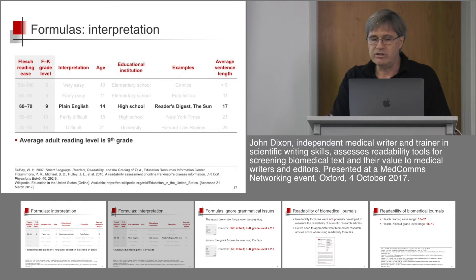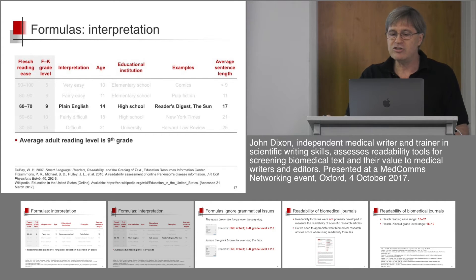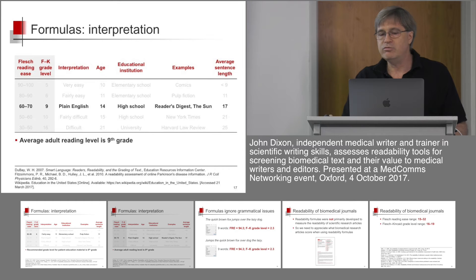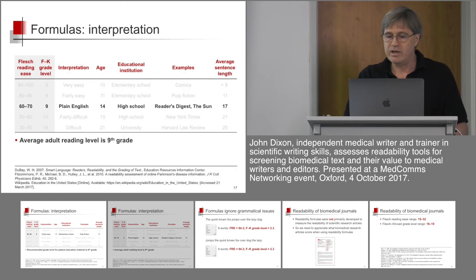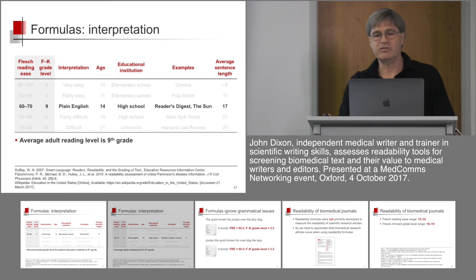Average adult reading grade is about 9th grade — plain English, high school level — the sort of text you'd be reading in Reader's Digest or The Sun, with sentences of around 17 words per sentence.